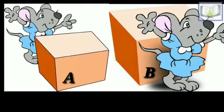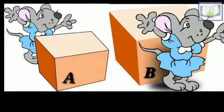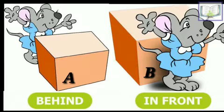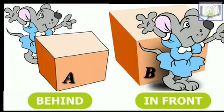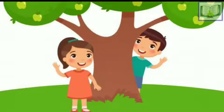Picture A says that the mouse is behind the block, and Picture B says that the mouse is in front of the block.